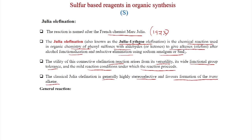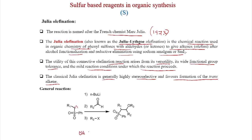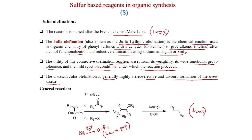This is very important: the trans alkene is formed. The general reaction is that the sulfonyl compound is first deprotonated with n-butyl lithium to give an anion, which reacts with an aldehyde to give the beta-hydroxy sulfone. The OH is protected with R₃X so that oxygen becomes OR₃, acting as a leaving group. After NaHg treatment, the trans alkene is formed — so the steps are: n-butyl lithium deprotonation, reaction with aldehyde, activation of the hydroxyl as a leaving group, and final elimination with NaHg.